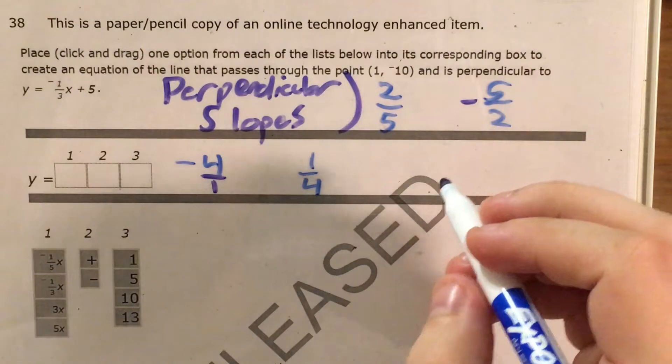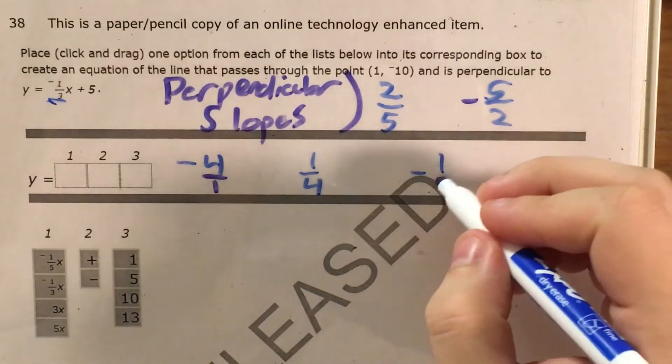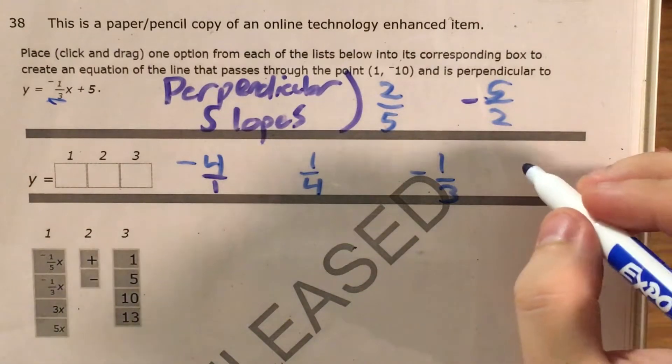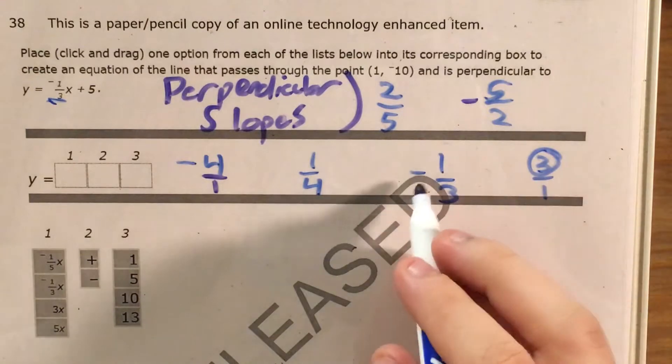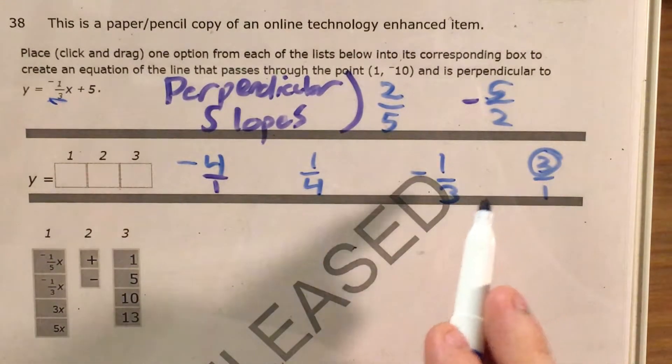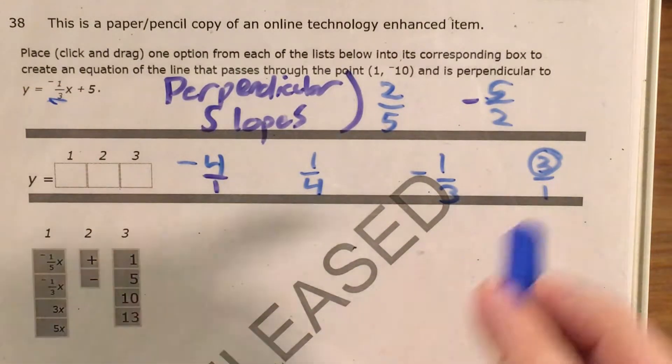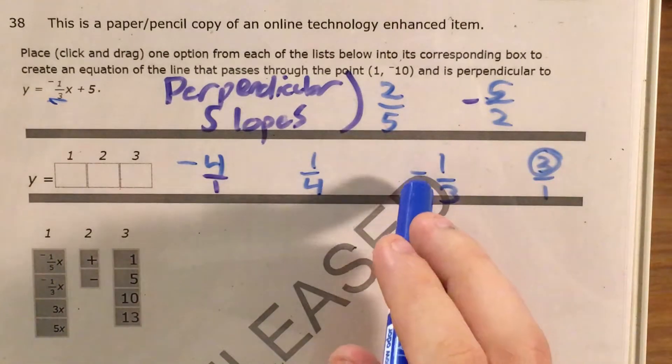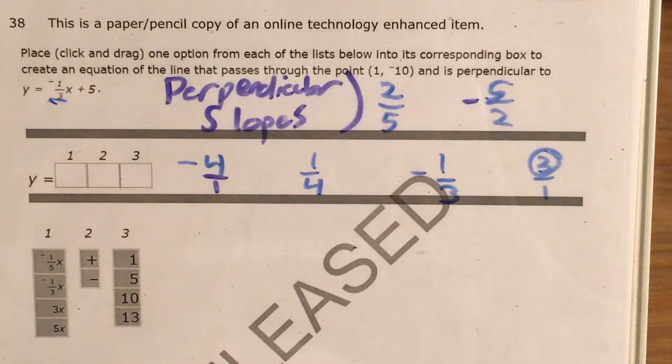And then finally, for a third example, I'm going to draw this directly from the problem and say that if I start at negative 1 third, I need to flip that over to become 3 ones, or 3, or just 3. And since this one was negative, this one has to be positive. So we've already gone ahead and figured out the perpendicular slope to this function, y equals negative 1 third x plus 5. And we figured out that the slope is 3 because we took 1 third, flipped it over to make 3 ones, and took away the negative sign.